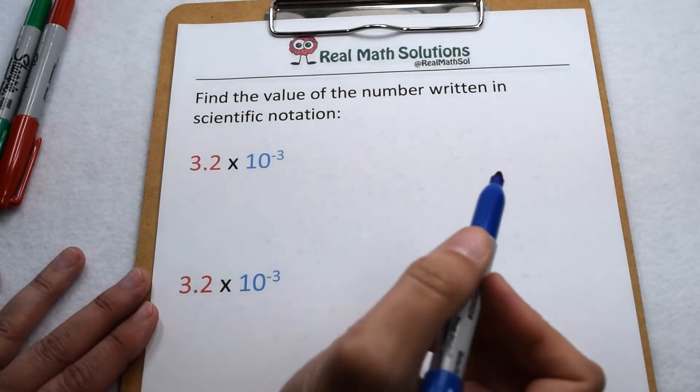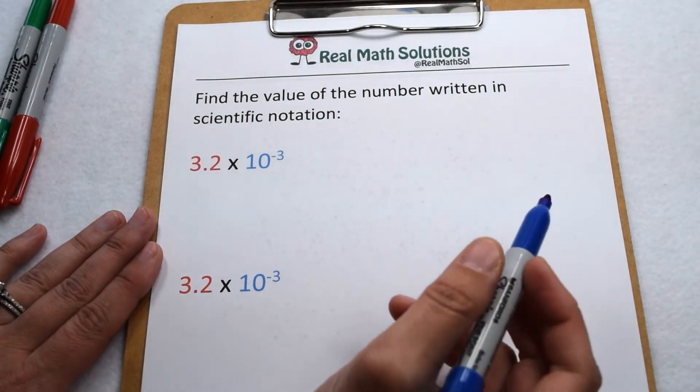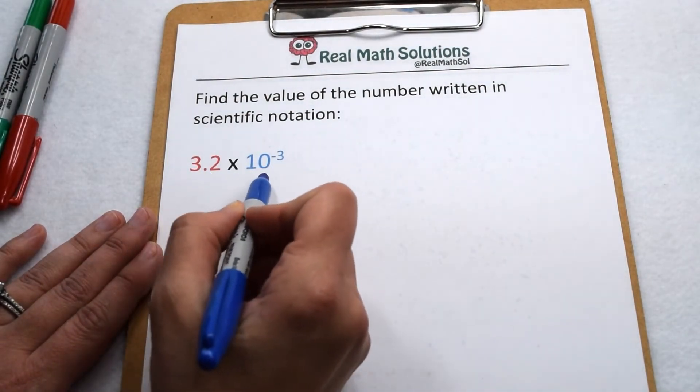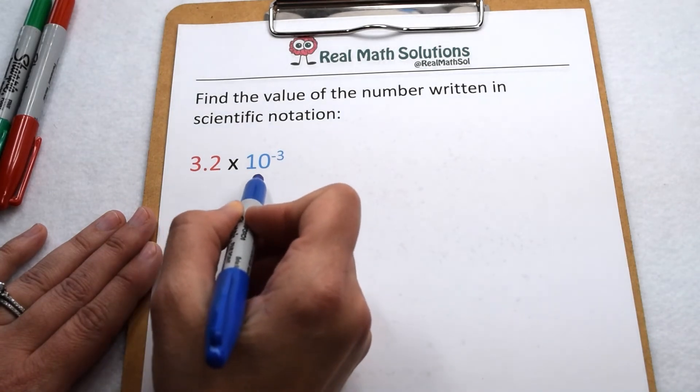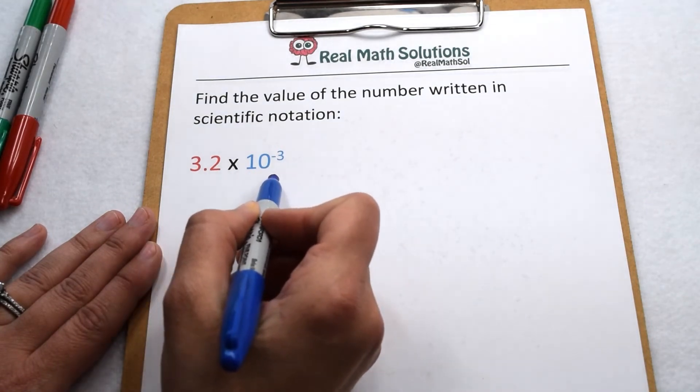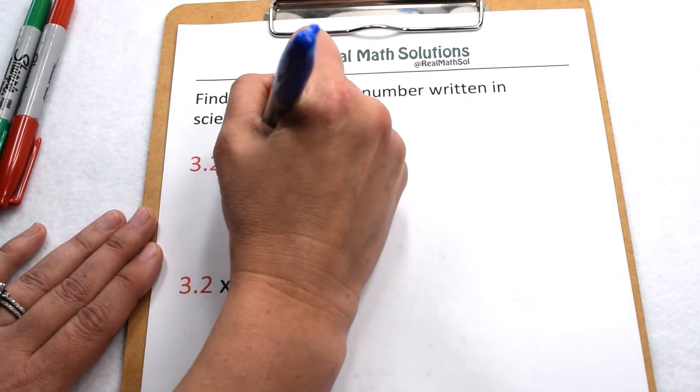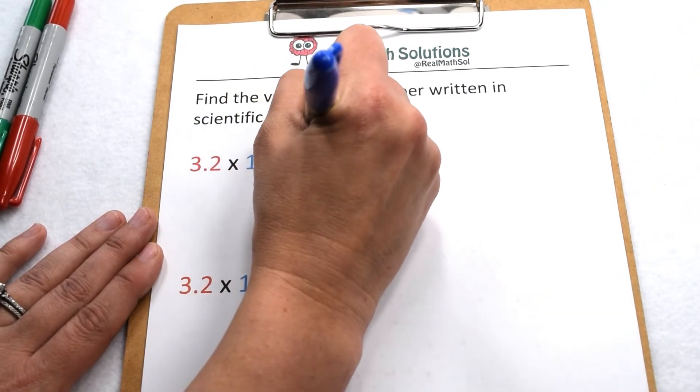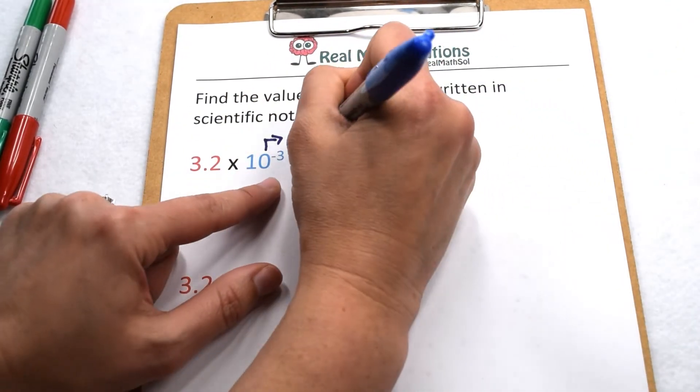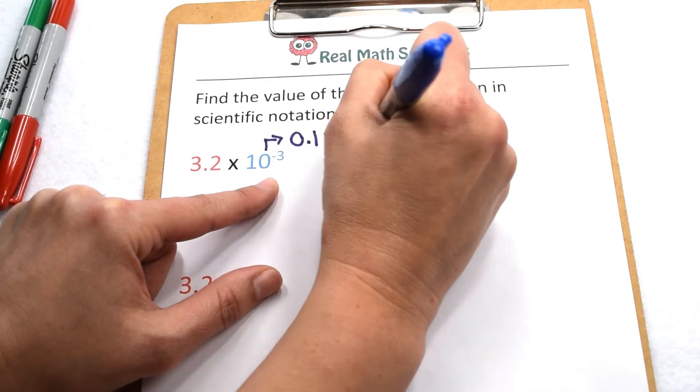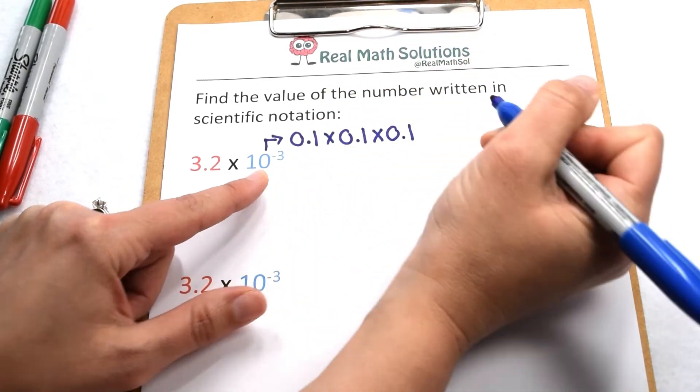Let's go the other way and find the value of a number written in scientific notation. One way to do that is to solve this using order of operations. To do that we'll start with the exponent. 10 to the negative third power. Negative exponents mean we're multiplying by the decimal 1 tenth.